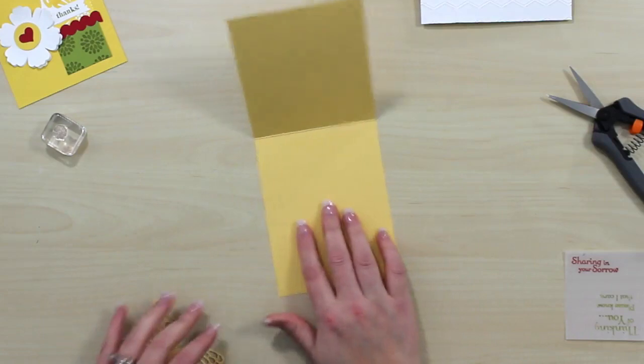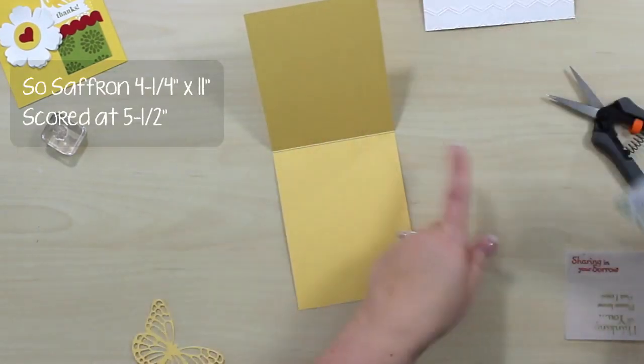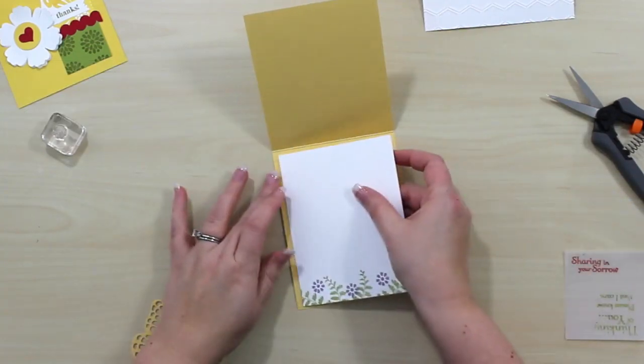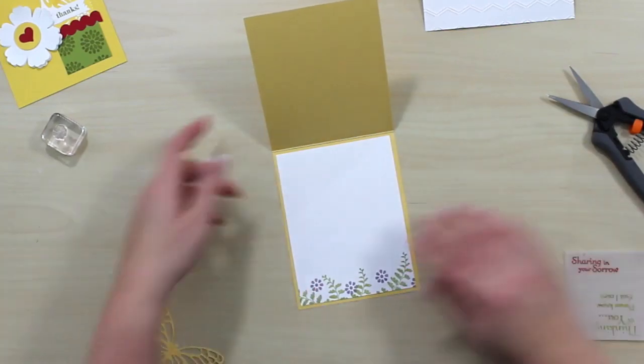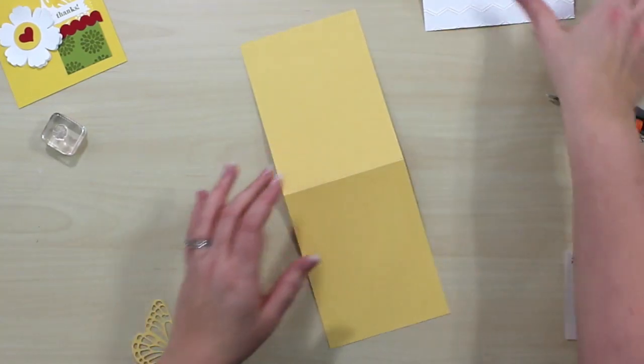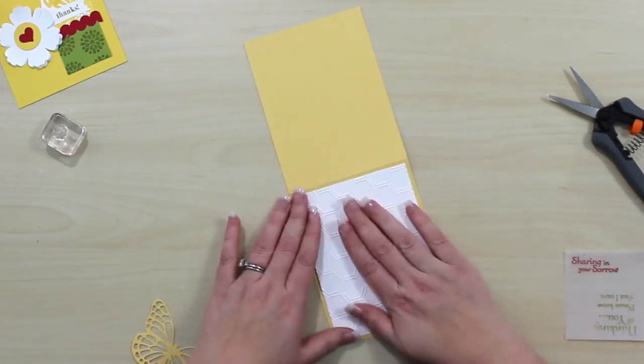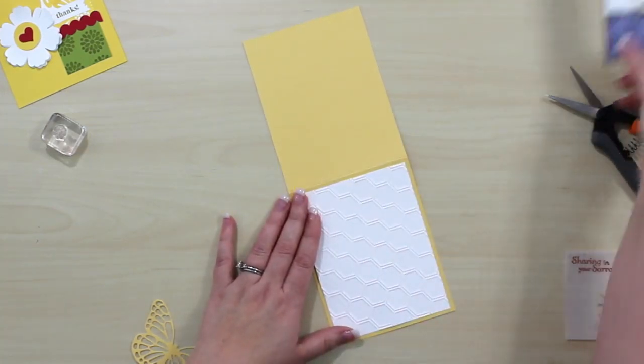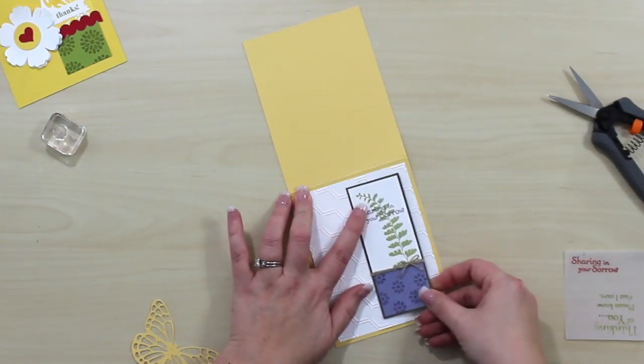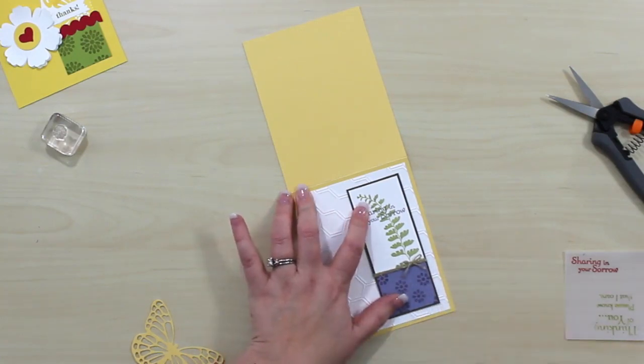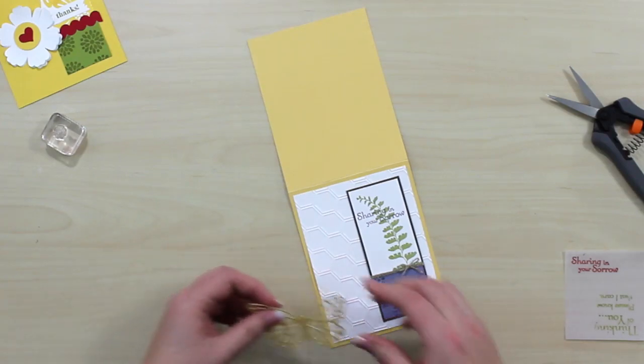So let's start with our card base. I'm going to use So Saffron cardstock, and it's going to be 4 1/4 by 11 inches scored at 5 1/2. I'm going to take this pretty piece that we stamped right here and drop that into the inside of our card. Next I'm going to take this guy with that fab texture, put it on the front of the card, and now we're ready for this piece right here. So it's going to go on the right-hand side, just kind of eyeballing it to center it from top to bottom, and leaving about a quarter of an inch of white on the right-hand side.